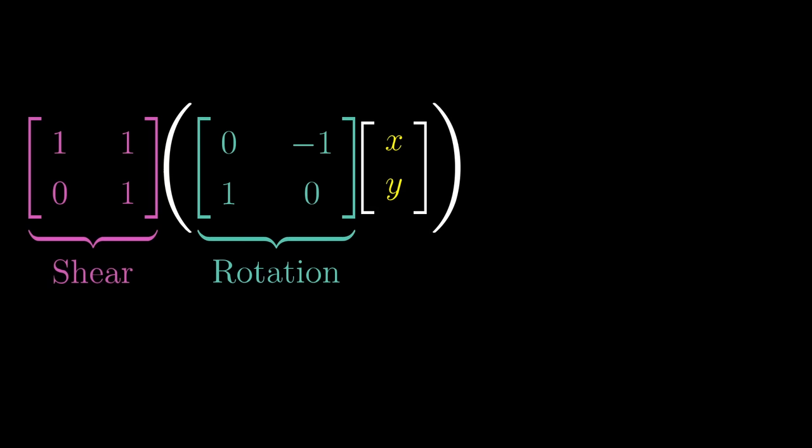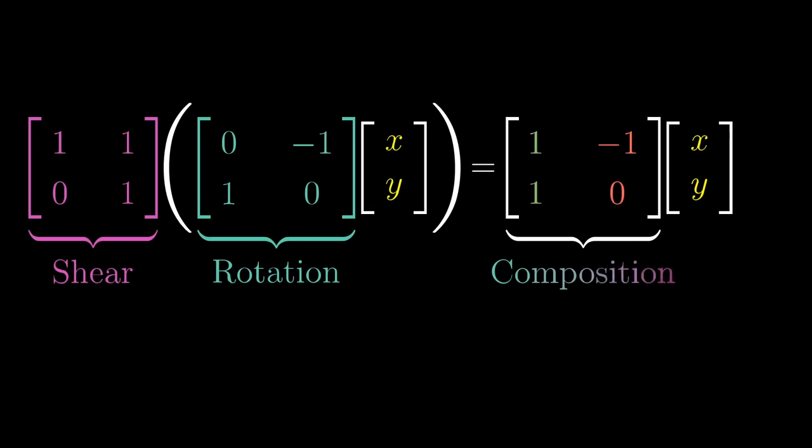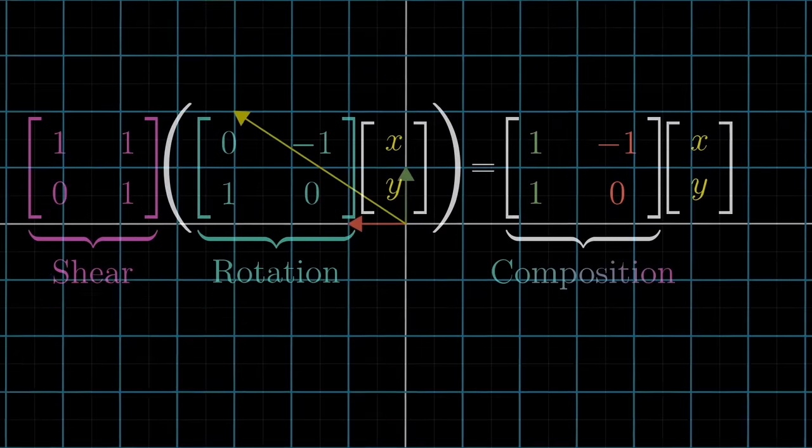This is, numerically speaking, what it means to apply a rotation, then a shear, to a given vector. But whatever you get should be the same as just applying this new composition matrix that we just found by that same vector, no matter what vector you chose, since this new matrix is supposed to capture the same overall effect as the rotation, then shear, action.